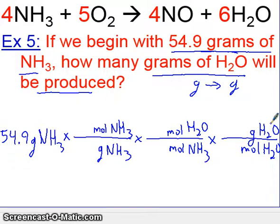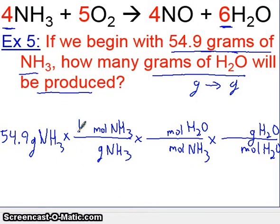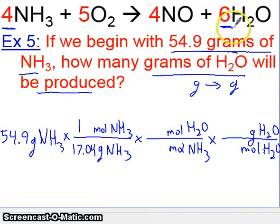Before we begin the problem, let's see the outline. We're asked to go from grams of NH3 to grams of H2O. To do that, we have to go through the moles, because the relationship between NH3 and H2O is given in moles, not in grams. So we first convert grams to moles, then go to moles of the other substance, and then convert back to grams. Any time you convert from moles to grams, the relationship comes from the periodic table — one mole of NH3 is 17.04 grams. When going from moles to moles, the numbers come from the balanced equation: four moles of NH3 for six moles of H2O.